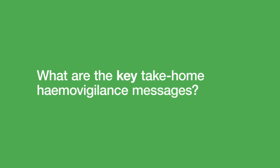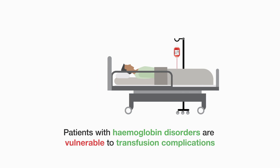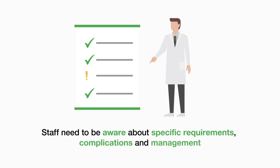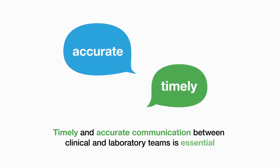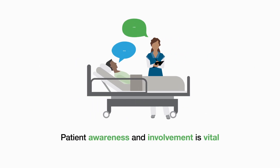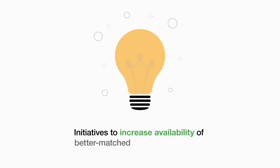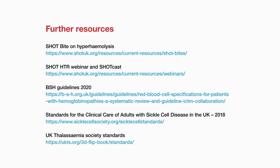The key take-home haemovigilance messages are: patients with haemoglobin disorders are vulnerable to transfusion complications; staff need to be aware of specific requirements, complications and management; timely and accurate communication between clinical and laboratory teams is essential; patient awareness and involvement is vital; and initiatives to increase availability of better-matched donors are ongoing. Further information can be found through relevant organisations' websites, as well as through the SHOT website.